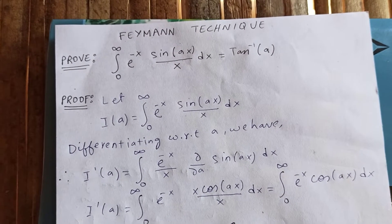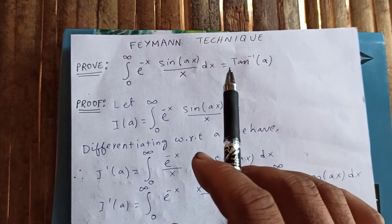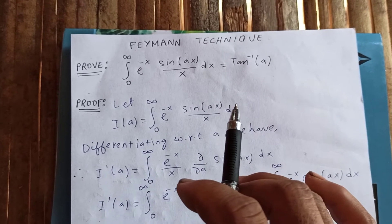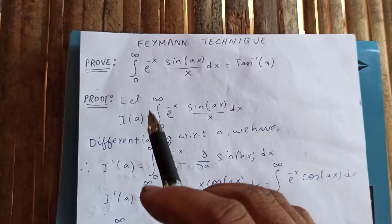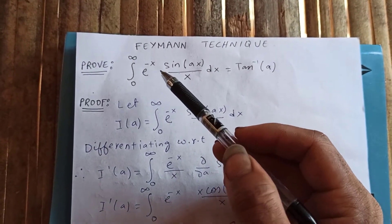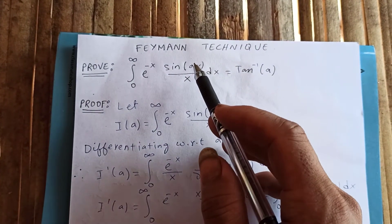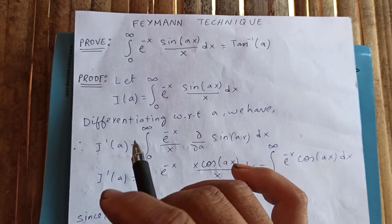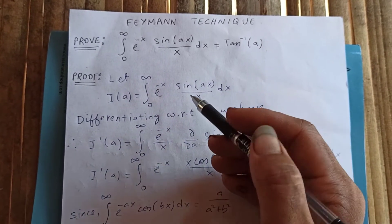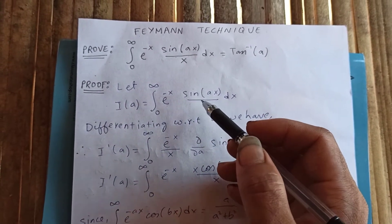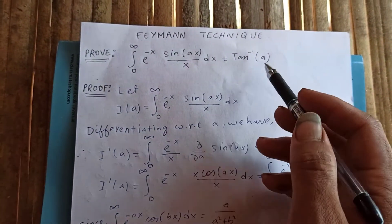Thanks for watching. Today let's do another definite integral using the Feynman technique, or differentiation under the integral sign. We'll prove that the integral from zero to infinity of e to the negative x times sine(ax) over x dx equals the inverse tangent of a, where a is the parameter.